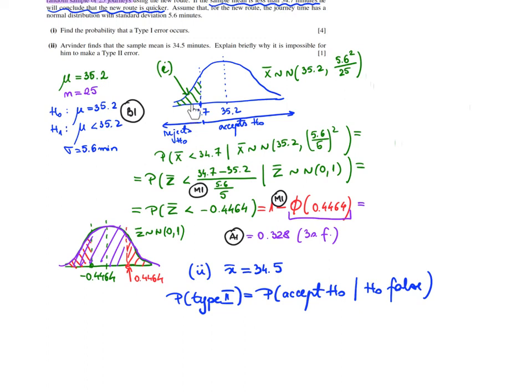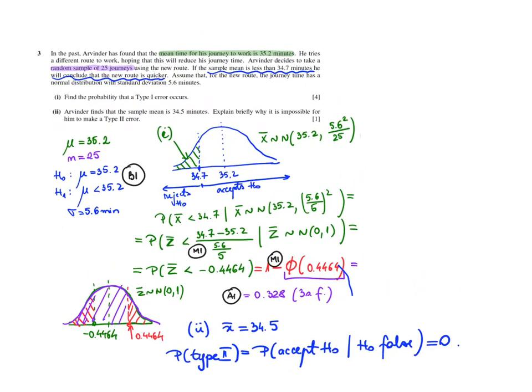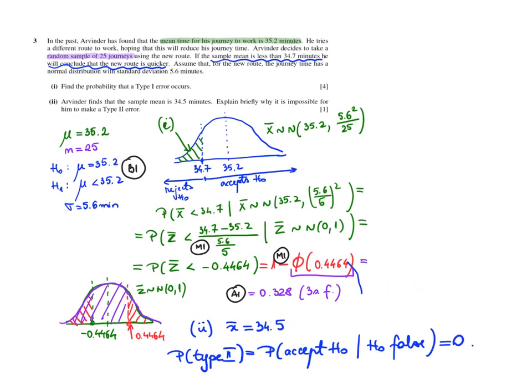So if Arvinder rejects H0, probability of accepting H0 is 0. It doesn't matter if H0 is false. But this one is 0. So probability of accepting H0 is 0. Therefore, this probability is 0. So he can't make, in this case, a type 2 error. This is your question. So in order to get the mark here, you need to add that H0 is 0 because H0 is rejected.